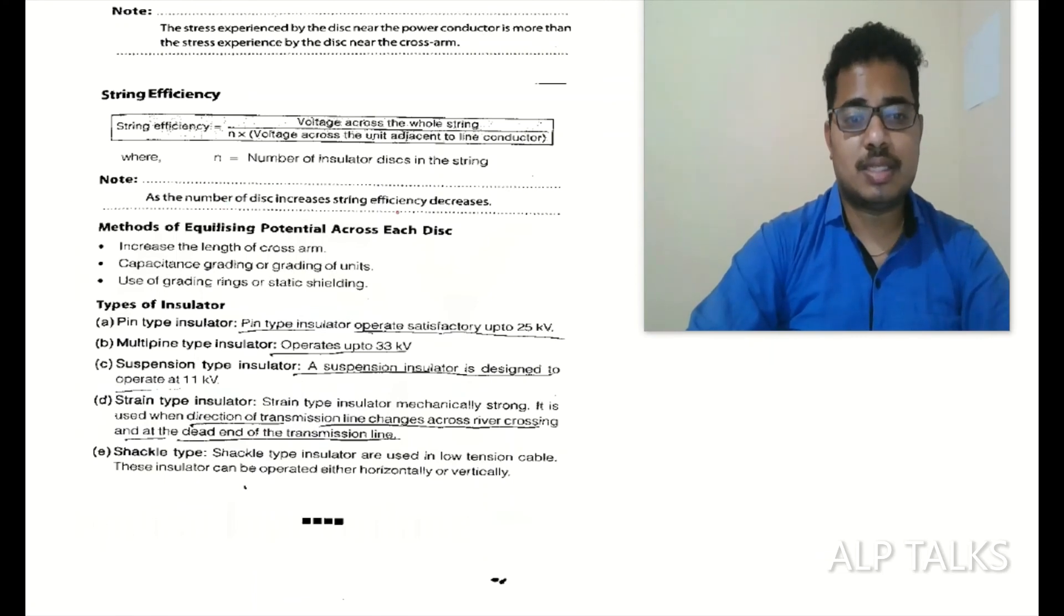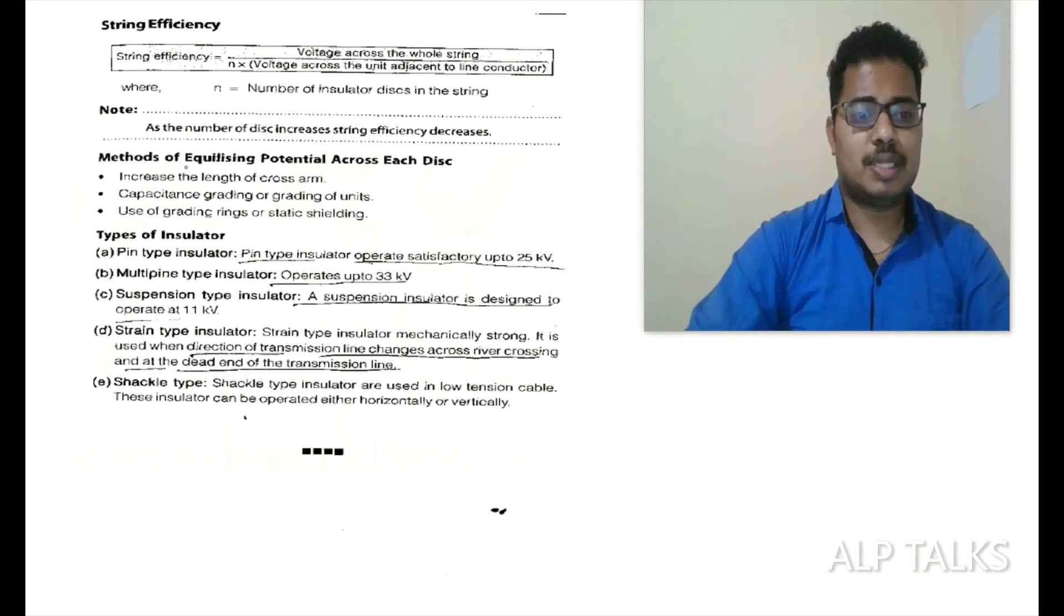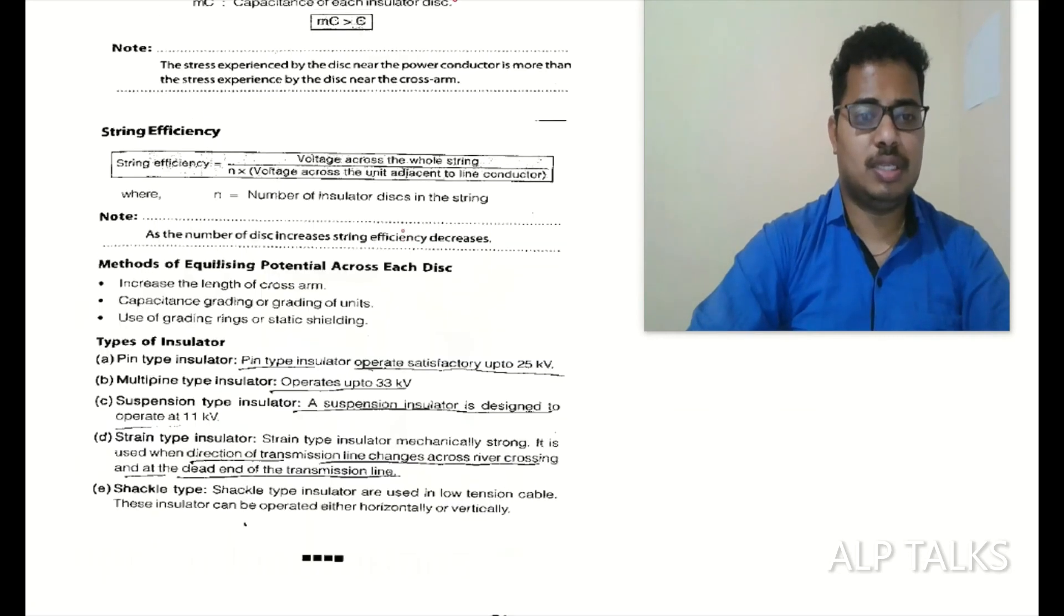As number of discs increases, string efficiency decreases. Methods of equalizing potential: increase the length of cross arm, capacity grading or grading of units, use grading rings or static shielding.